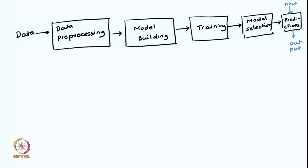Note that in a single go we may not be able to get the final model, so there might be a loop. We do training, we do model selection, and if we do not have a good enough model, we go back again, recheck the features, see if we can add more features, and repeat the process. We do this until we are satisfied with the model quality. Once we get a model of reasonable quality, we deploy that model and use it to get predictions on new data. This is the entire machine learning flow.